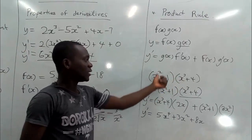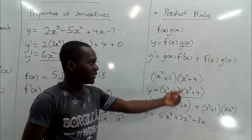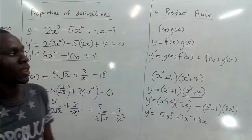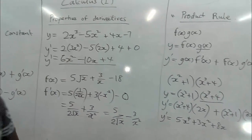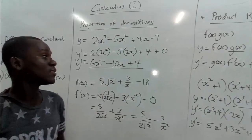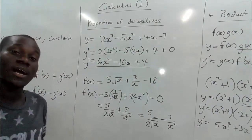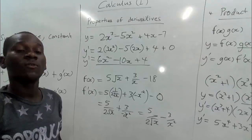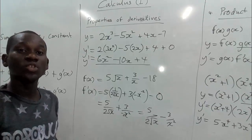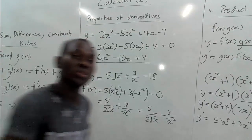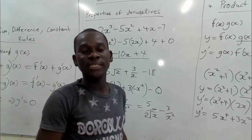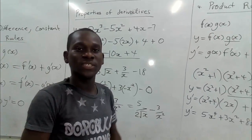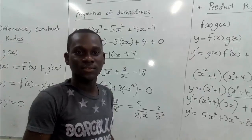This is the derivative of (x squared plus 1) times (x cubed plus 4). We will pause here, and in our next lesson we will cover two more rules: the quotient rule, the chain rule, and implicit differentiation. We will meet again — goodbye!